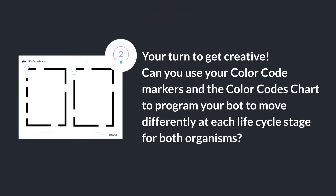Your turn to get creative. Can you use your color code markers and the color code chart to program your bot to move differently at each life cycle stage for both organisms?